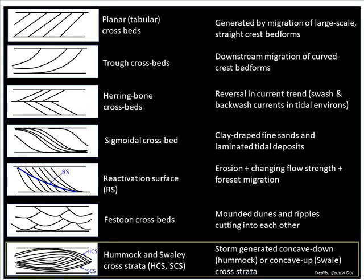In terms of dimensions, hummocky cross stratification has an amplitude of about 20 to 30 centimeters, and in terms of wavelength laterally, you can have up to about a meter or sometimes more.